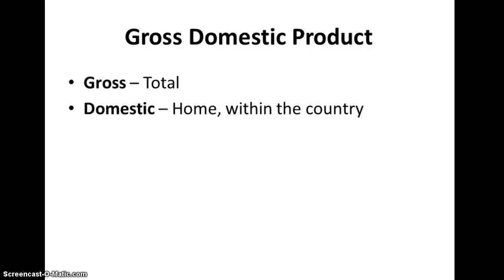Now we're going to talk about gross domestic product. The word gross means total. The word domestic means home or within country. And product is what is made. So when we talk about gross domestic product, we're examining what is being produced in our country. If a lot of useful things are being produced, we can say that country is doing well. If you have a high gross domestic product, that probably means you have access to a lot of things — healthcare, education, food, resources.